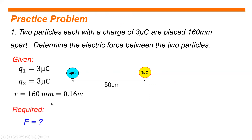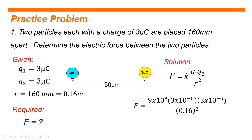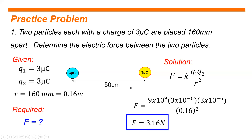We are asked to solve for the electric force between these two charges. Using our equation and substituting all values: F equals 9 times 10 to the 9th, multiplied by 3 times 10 to the negative 6, multiplied by 3 times 10 to the negative 6, all over 0.16 squared. The force equals 3.16 newtons. This is our answer for problem number one.